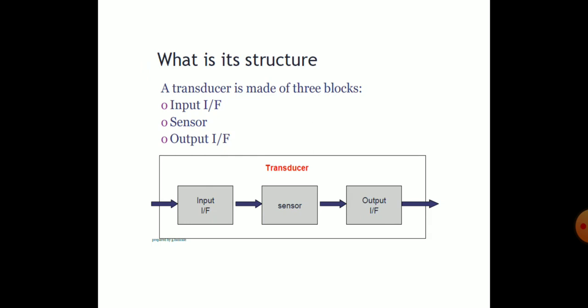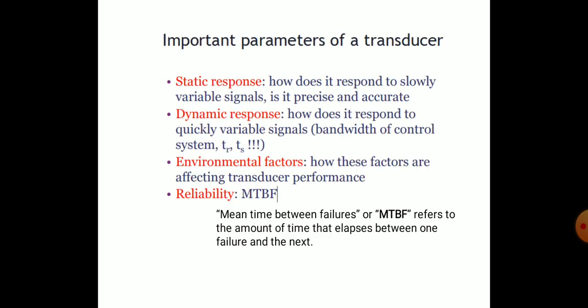The structure of a transducer consists of an input, a sensor, and an output. Important parameters include static response and dynamic response. Static characteristics include accuracy, precision, repeatability, reproducibility, calibration, etc. Dynamic characteristics are time-varying types including response time, measuring lag, and more — these have been covered in the first video of this module.